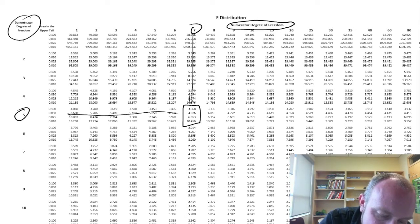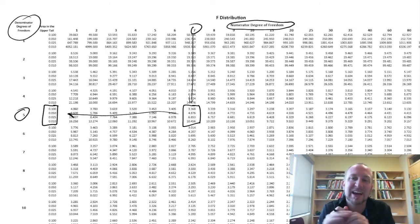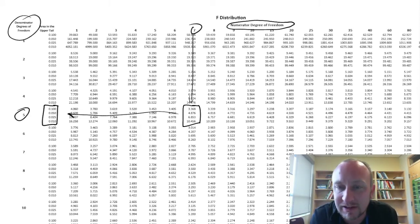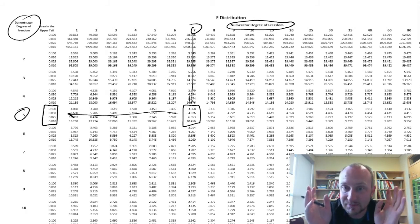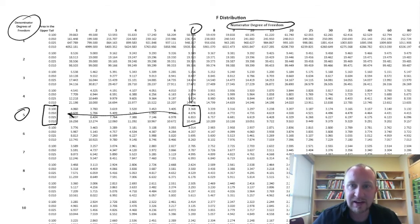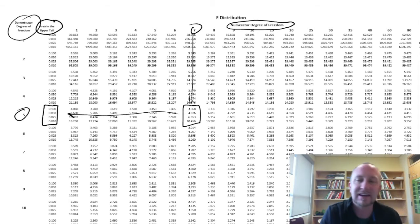We can ignore pretty well everything in this table except for these four critical values where those two come together, and these four corresponding probabilities. Coming from the Z-distribution where there's just one variant and we had all kinds of detail — p-values, probabilities to four decimal places — now there are so many variants that for each variant we have only four critical values and four probabilities, and notice we only have these probabilities in the upper tail.